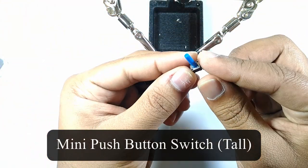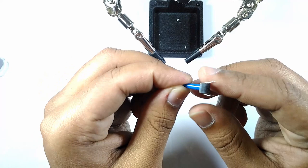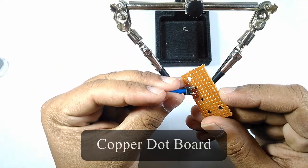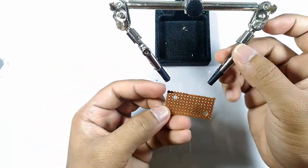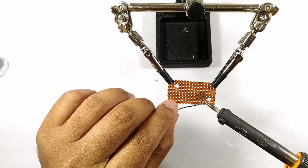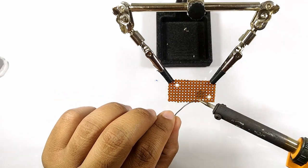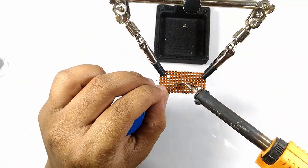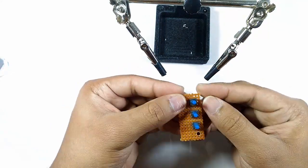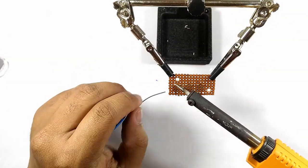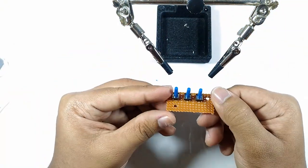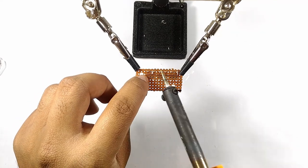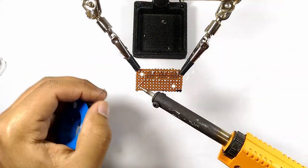I soldered in three push-button switches to a piece of dot board which will be used to change the settings of the watch. I connected the terminal of all three switches to the common contact of the watch. I connected the buttons of the watch to the individual switches.